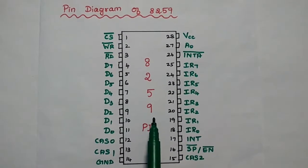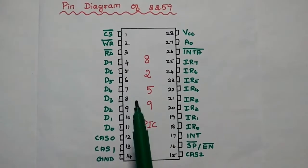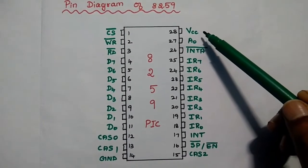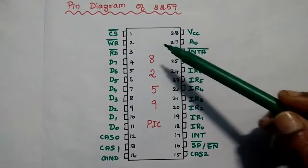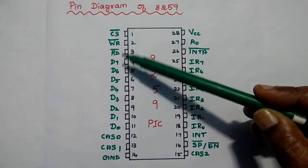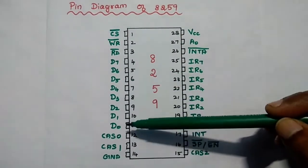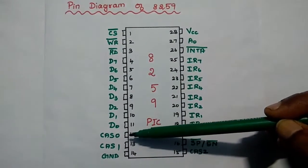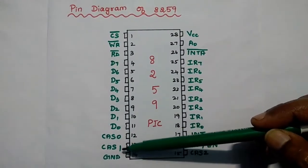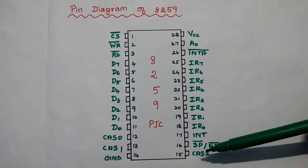This is the pin diagram of 8259A. It is a 28-pin dual inline package IC with 14 pins on each side. The 14th pin is grounded, and the 28th pin is VCC, that is +5 volt power supply. We have chip select bar, write bar, read bar, and A0 — these 4 are the control signals from the processor. Then we have 8 data lines. We also have CAS0, CAS1, and CAS2 — that is cascading connections 0, 1, 2 — and these 3 pins are used to cascade the 8259 ICs.